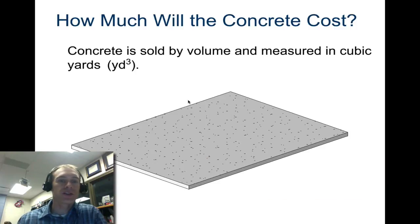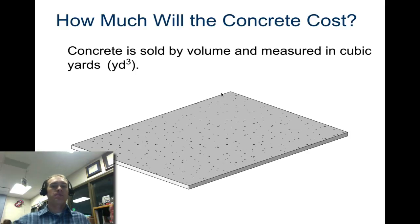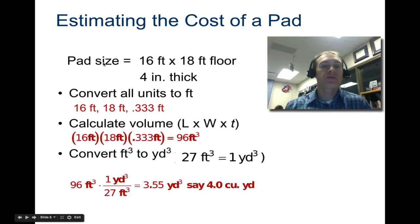What we're going to do in this project is determine how much our concrete is going to cost. Concrete is always sold by volume and measured in cubic yards - three feet by three feet by three feet deep. That's the number you would use when you're buying concrete. If you're going to estimate the cost of a pad, and your pad size is 16 feet by 18 feet and four inches thick, the first thing you do is convert all units into feet. This might be a good slide to screenshot and add to your notes because it shows all the steps you need to do.